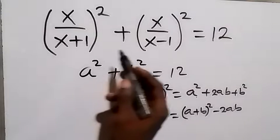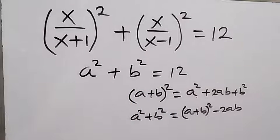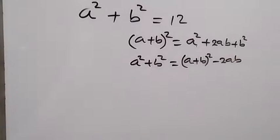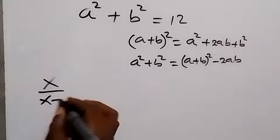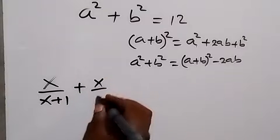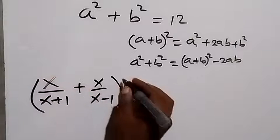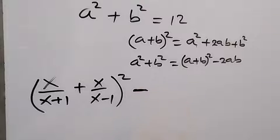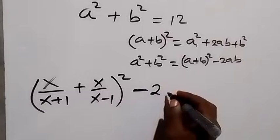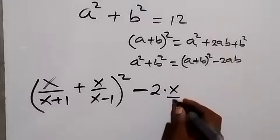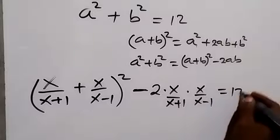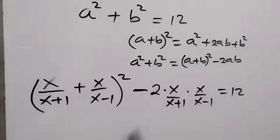Our expression will now become: (a+b) squared minus 2ab equals 12. Here, a is x over (x+1) and b is x over (x-1). So we have: [x/(x+1) + x/(x-1)] squared, minus 2 times [x/(x+1)] times [x/(x-1)], equals 12. We have written a squared plus b squared in the form of (a+b) squared minus 2ab.